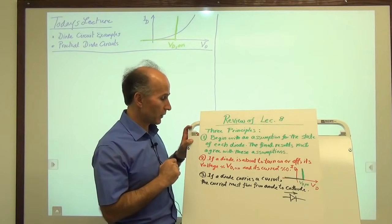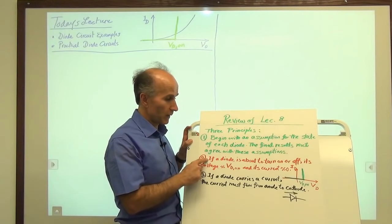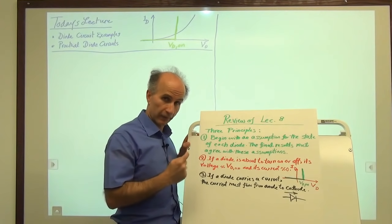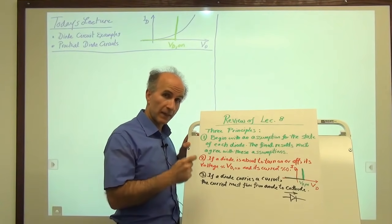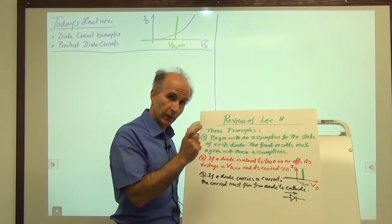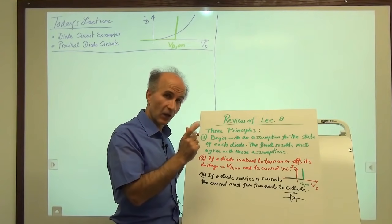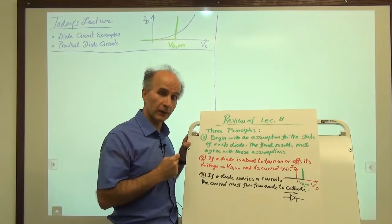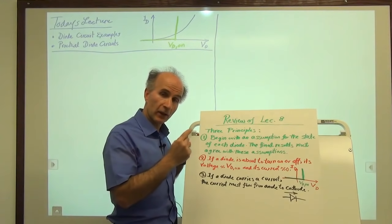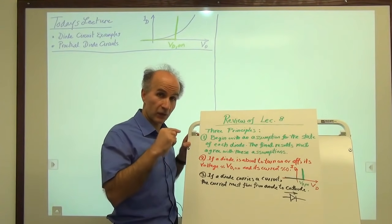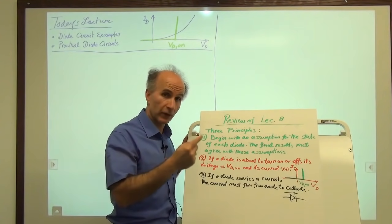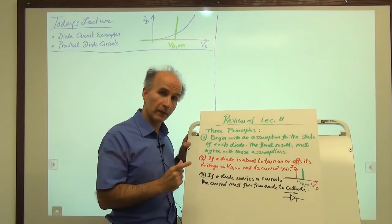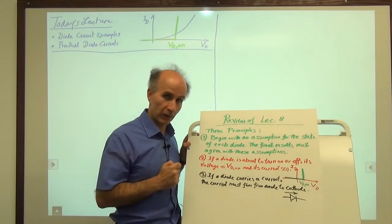In addition, what we noticed was that if a diode is about to turn on or off, it must have a voltage equal to Vd_on across it, assuming a constant voltage model, and its current must be small because it is just about to turn on or off. That's a very important point to keep in mind when we are analyzing diode circuits.